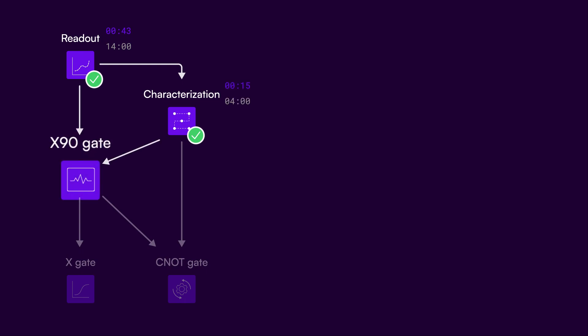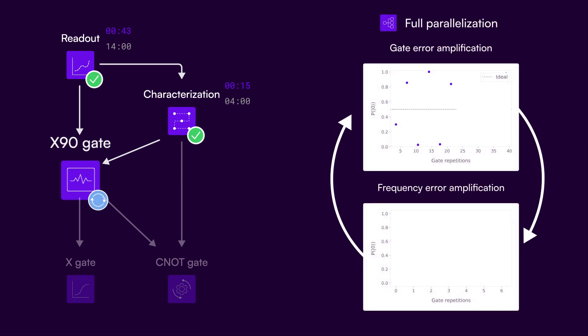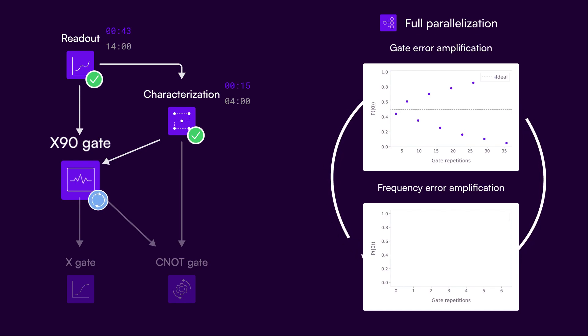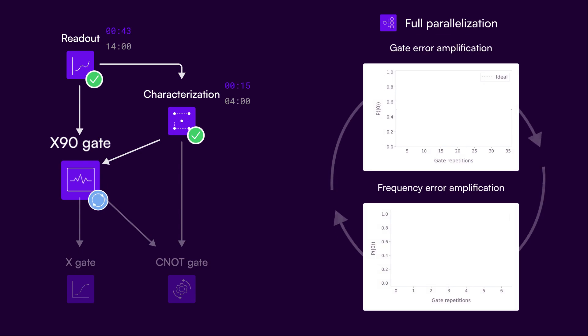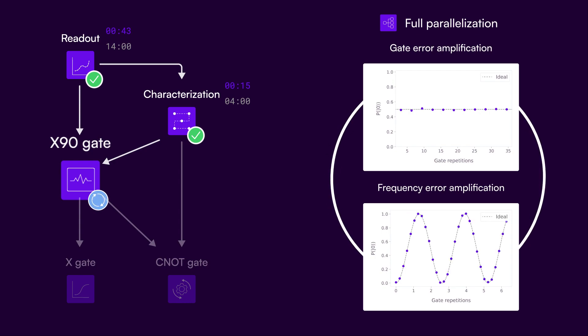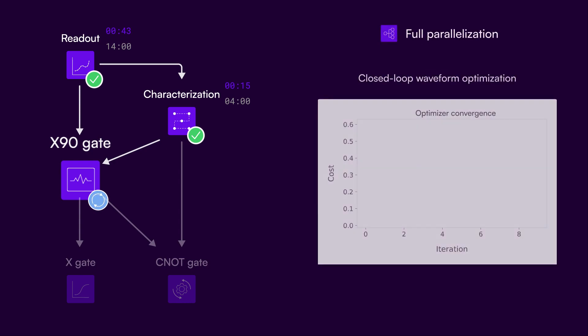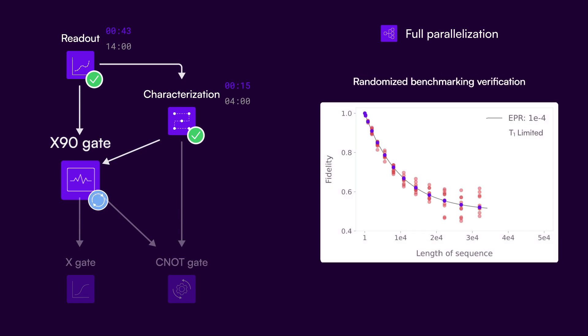You can now perform high fidelity parallelized calibration of X90, or Pi over 2 gates, starting with the parameters coarsely estimated through the preceding characterization step. Using an error amplification scheme, the node iteratively adjusts the drive amplitude and phase for each qubit using model-based optimization. As the iterative process continues, the measured deviation from the ideal case gradually decreases. With these parameters in hand, you can then use black-box closed-loop optimizers to attain coherence limited X90 gates across all devices, as validated by randomized benchmarking.